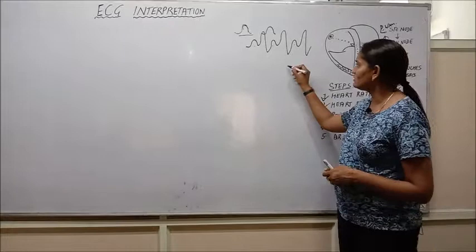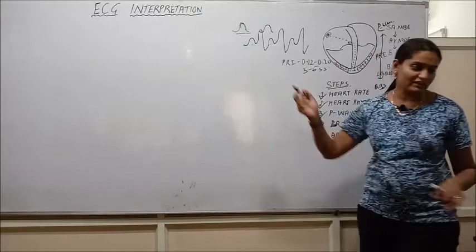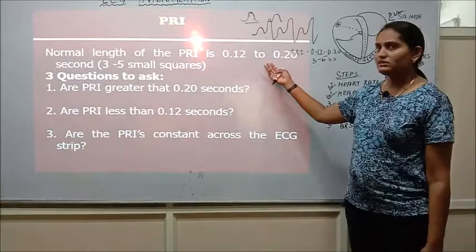And we have already seen on an ECG strip, PR interval has to be in normal time period of 0.12 to 0.20 seconds or we can say 3 to 5 small squares. So let us see the questions about PR interval. The normal length is 0.12 to 0.20 seconds and there are three main questions to be asked from PR interval while seeing the ECG.